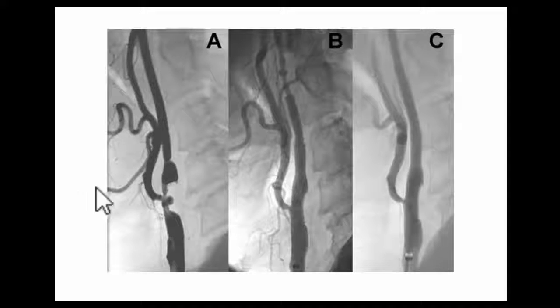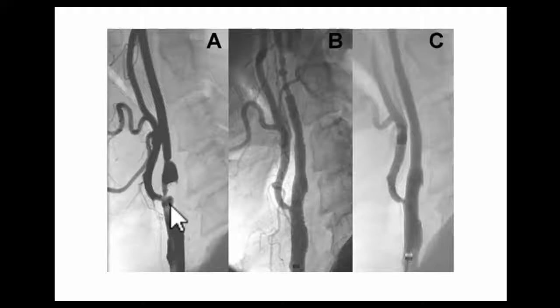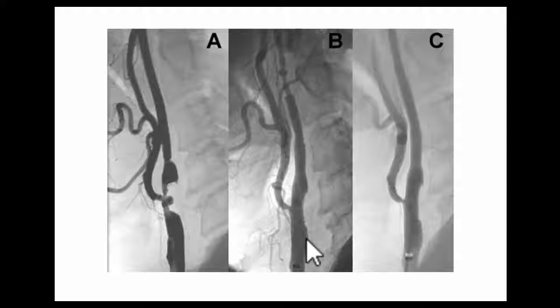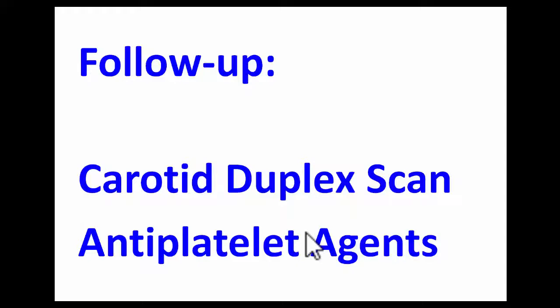Here is another example showing not only a critical stenosis but also an ulceration in the plaque obstructing the carotid artery. Images B and C show the results after placement of a carotid stent, demonstrating significant improvement in the arterial lumen.